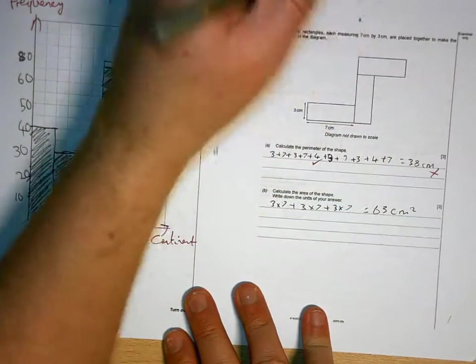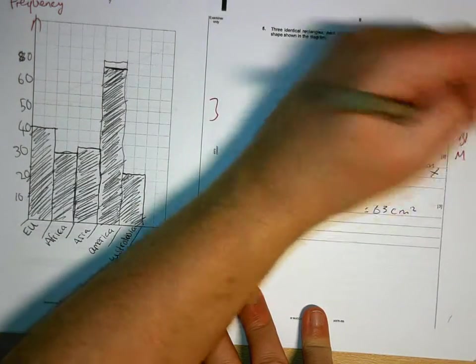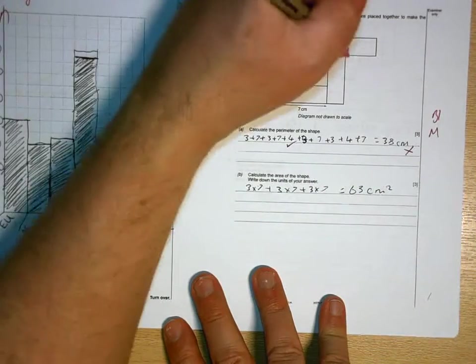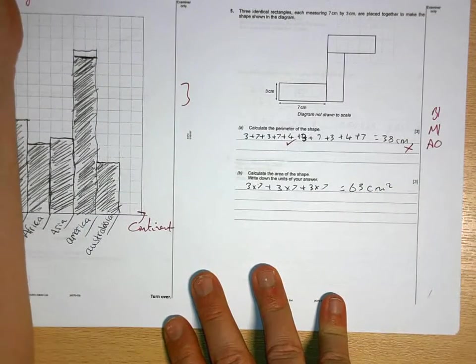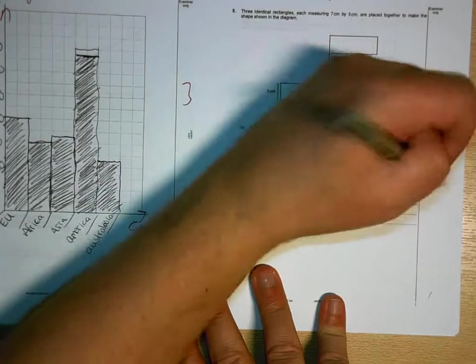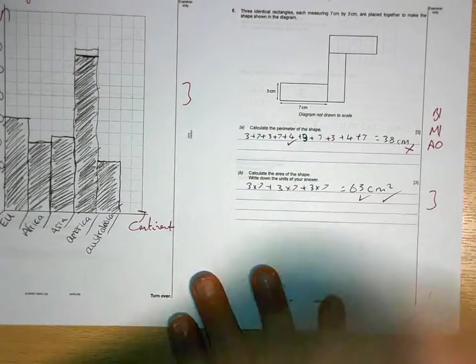Your method is right, but you haven't added them up correctly. So one mark for spotting 4 is the missing one. One mark for adding them. But then you lose that. 63 is right, and so is the units. So well done there. 8 for the page.